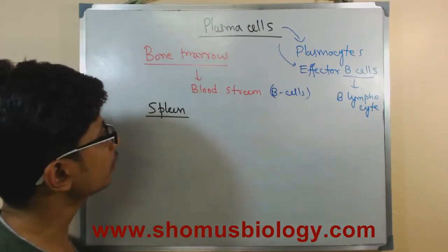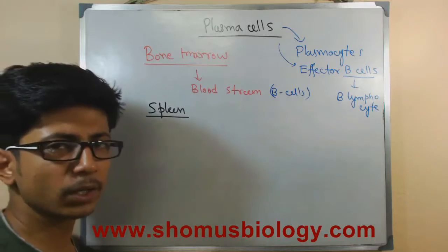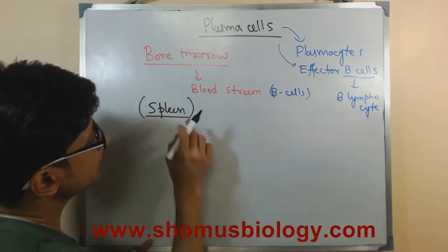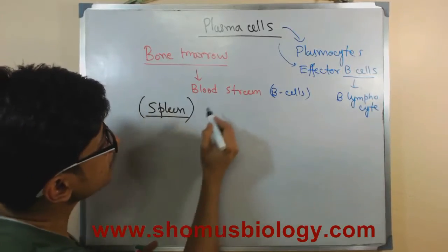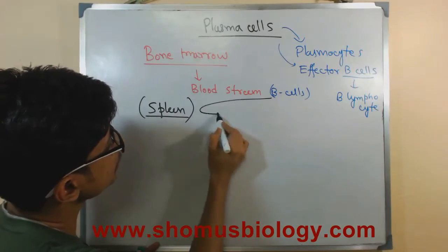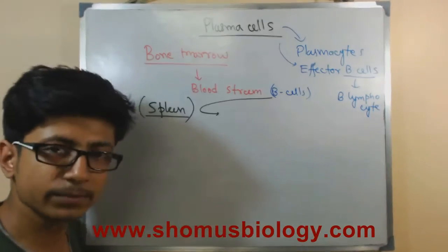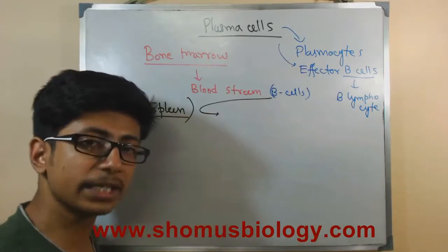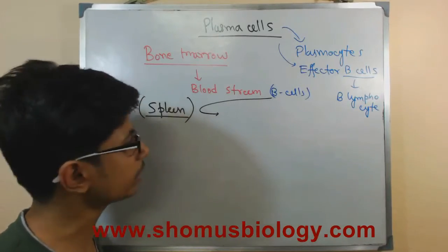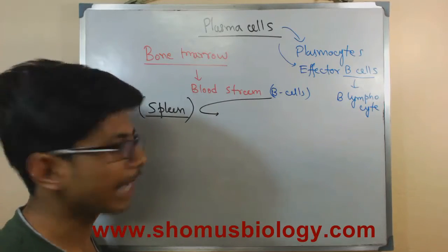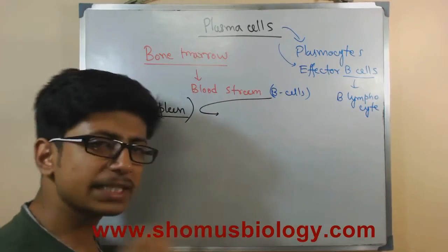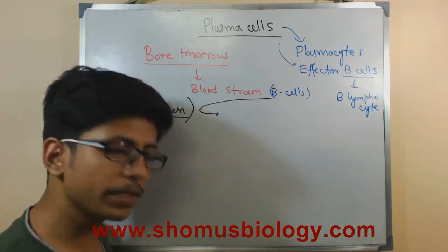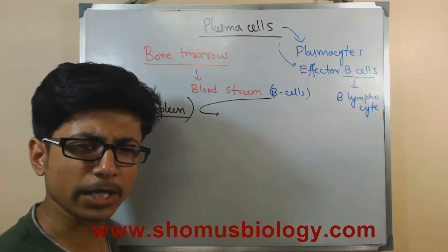Other small lymphatic organs are also present. This is one of the examples of a secondary lymphatic organ. In this lymphatic organ these B effector cells are sitting, and once these B lymphocyte cells are sitting in the spleen or any other secondary lymphatic organ, if there is any infection —